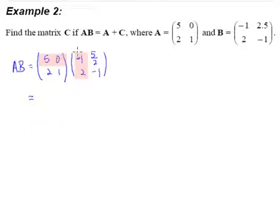First row multiplied by the first column: 5 times negative 1 gives us negative 5, plus 0. Next column: 5 times 5 over 2 gives us 25 over 2, plus another 0 because 0 times negative 1 is 0.